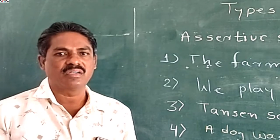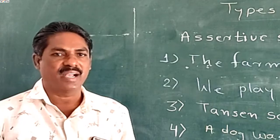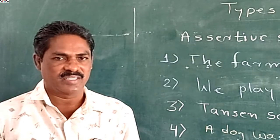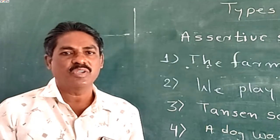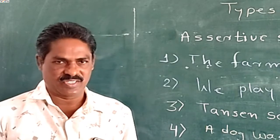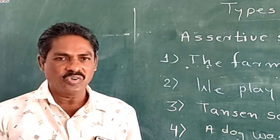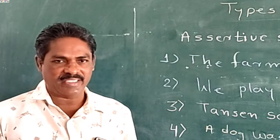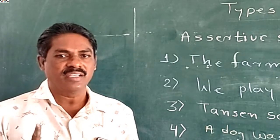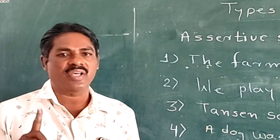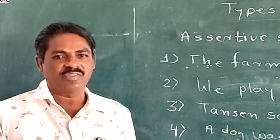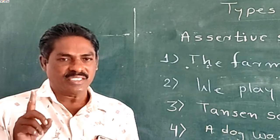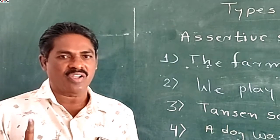Today, we are going to learn the first topic of types of sentences — that is, assertive sentences, also called declarative sentences. Assertive sentence means a sentence that makes a statement, or states a fact. Such sentences are also called simple statements.